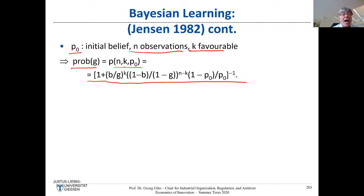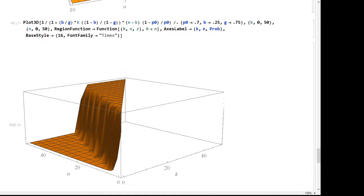You probably know this from stochastic courses in school. I don't expect you to derive this binomial expression — it's ugly, but that's what it gives you. I want to show you in Mathematica how that looks, because you should get some intuition.